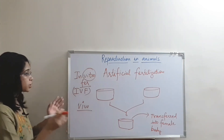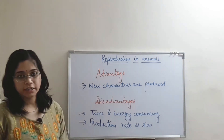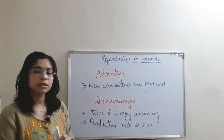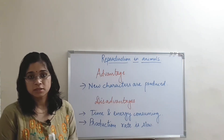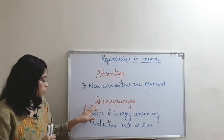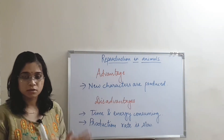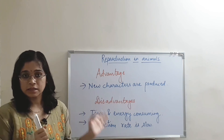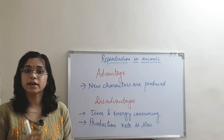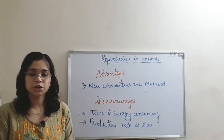Now, let's see the advantages and disadvantages of sexual reproduction. The advantage is that new characters are produced through this method, because two organisms are taking part. As for disadvantages, it is energy and time consuming. More time is taken in sexual reproduction compared to asexual reproduction, and the number of organisms produced is very less compared to the asexual type.